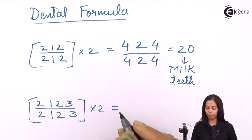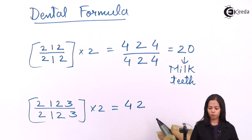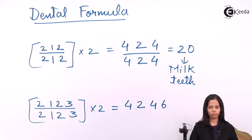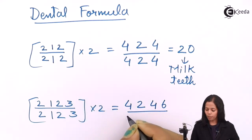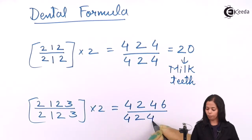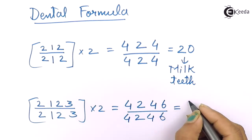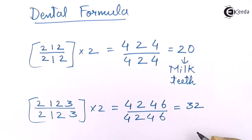After multiplying by two, the upper jaw gives you four incisors, two canines, four premolars, and six molars. The same goes for the lower jaw: four incisors, two canines, four premolars, and six molars. If you add all these numbers, the total gives you 32. So total you have 32 permanent teeth.